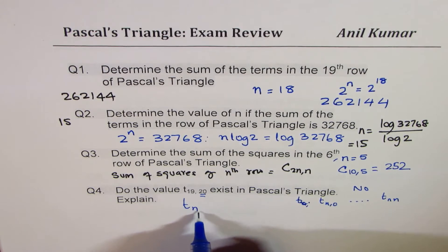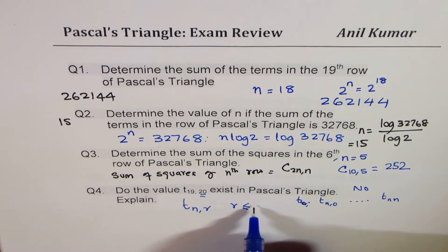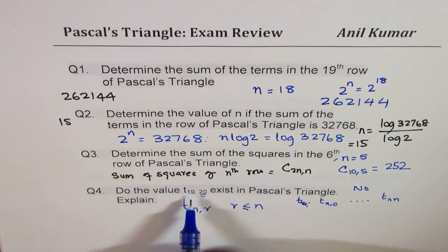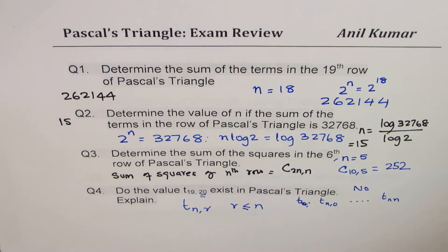The number here cannot be greater than the previous number. So in tnr, r has to be less than or equal to n. That is the reason. So we could go maximum till T19, 19. So that is the reason why that value will not exist in Pascal's Triangle.